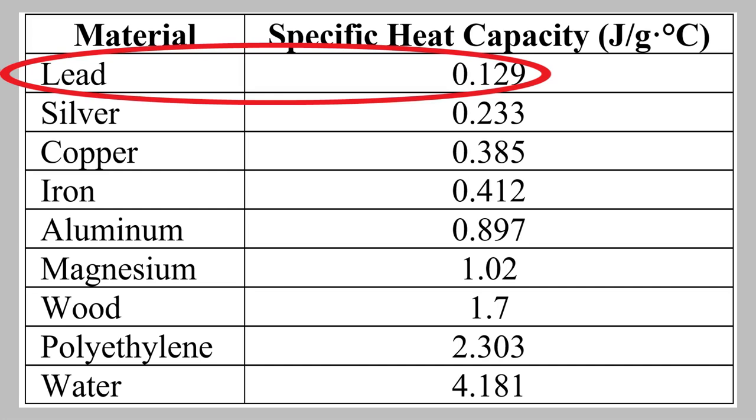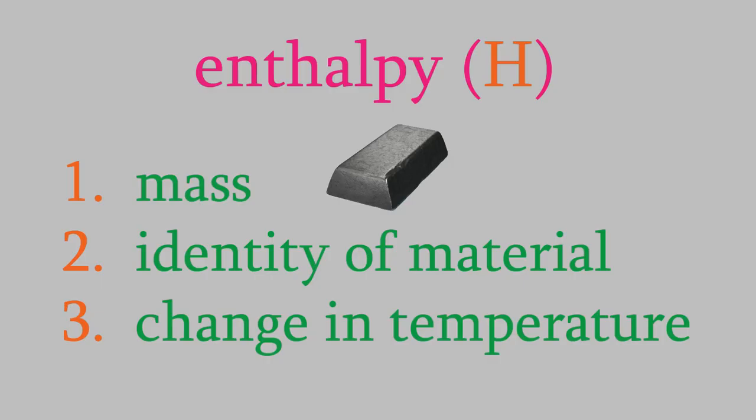So, if we start heating both of them at the same time, the lead will get hotter faster. The last thing that matters when determining how much heat it takes to warm an object is how much we want the temperature to change. That makes good sense. If we want to change the temperature by 10 degrees, it'll take twice as much heat than if we only want to change the temperature by 5 degrees.